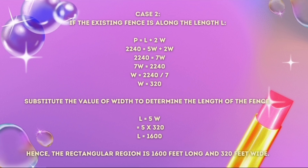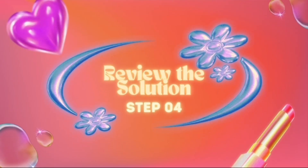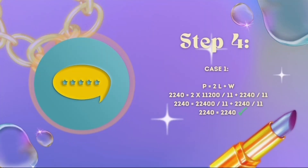For case two, if the existing fence is along the length L, then P = L + 2W. Substituting the values the same way as case one, we get a width of 320 feet and a length of 1,600 feet for case two.